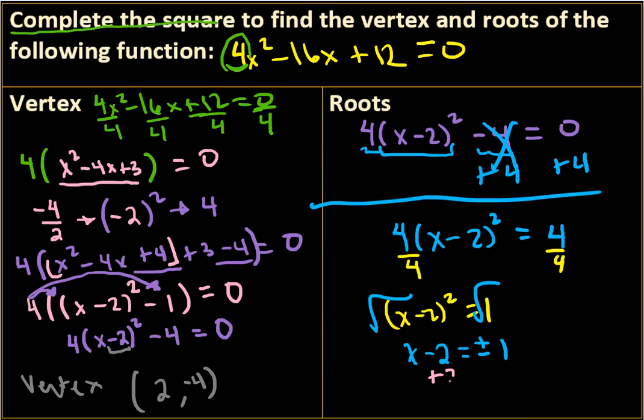So now we add 2 to both sides. So I get x is equal to 2 plus or minus 1. That is 2 plus 1 is 3, and then 2 minus 1 is 1. So then my roots are at 1 and 3.